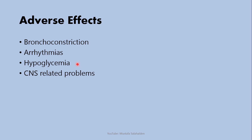Hypoglycemia occurs because of decreased glycogenolysis and decreased glucagon secretion, causing hypoglycemia in normal people and profound hypoglycemia in diabetic patients with severe symptoms. Finally, there are CNS-related problems: depression, lethargy, fatigue, weakness, hallucinations, and other central nervous system problems that may occur with this drug.